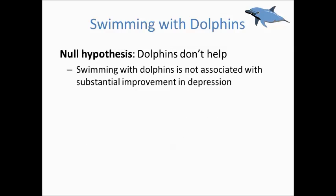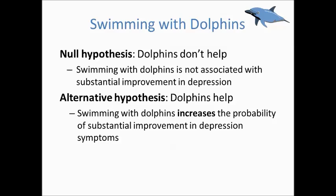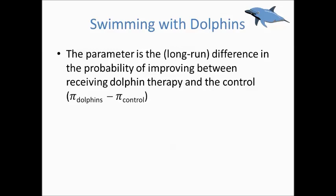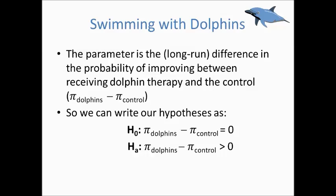Our null hypothesis is that the presence of dolphins does not help. That is, whether or not someone swims with dolphins has no association with whether or not someone shows substantial improvement in depression. Our alternative hypothesis is that the presence of dolphins is helpful. That is, swimming with dolphins increases the probability of substantial improvement in depression symptoms. We can define our parameter of interest as the difference in the probabilities of substantial improvement between the two groups, which we can symbolize with π dolphins minus π control. Thus, we can state our hypotheses as shown.